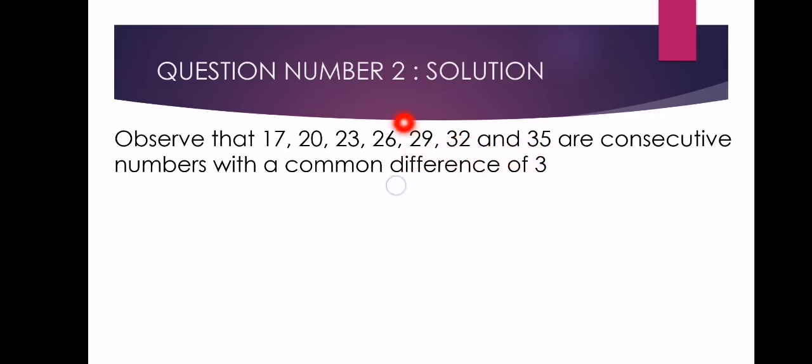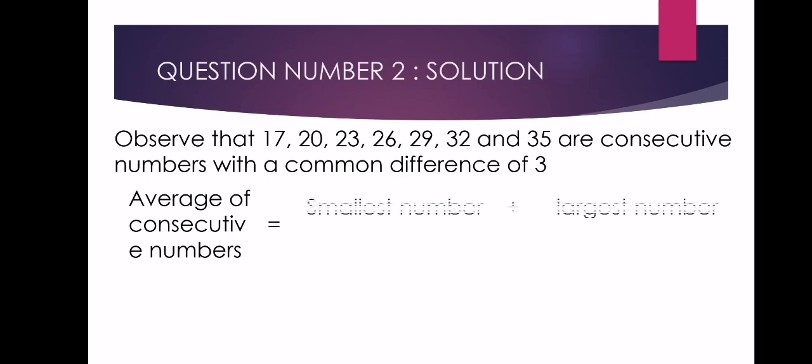When numbers are ordered like this, to get the average of consecutive numbers, the formula we use is simply the smallest number plus the largest number divided by 2. Again, the smallest number plus the largest number divided by 2.